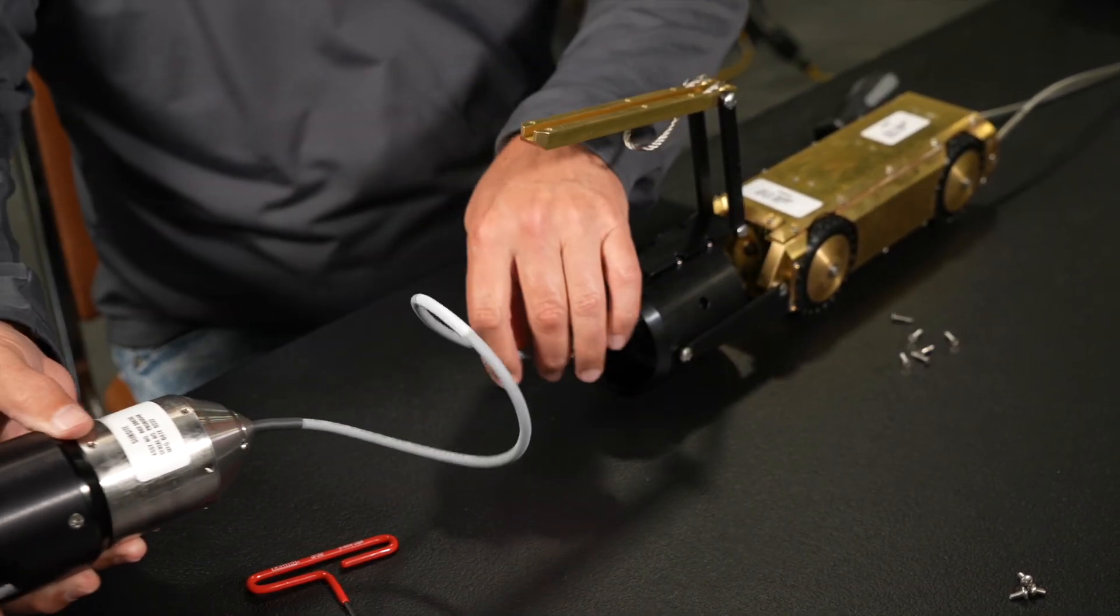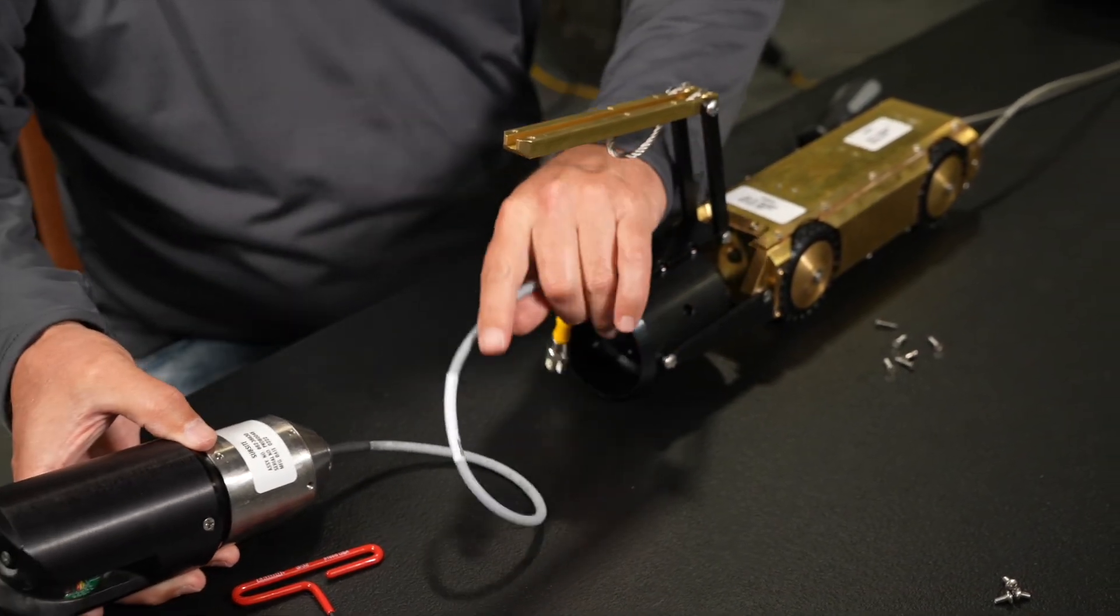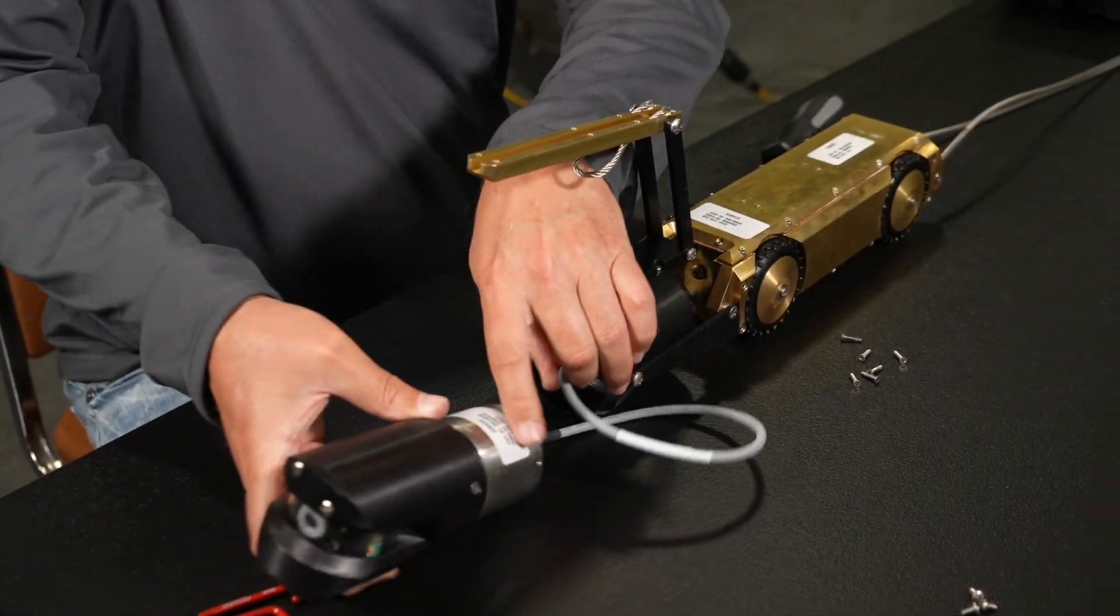Gently feed the camera power cable through the front of the camera sleeve and along the top of the Mighty Mini body.